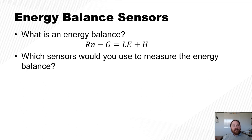Okay, so the next thing I'd like to touch on is energy balance sensors. So energy balance, what is an energy balance? It's simply the net radiation minus the ground heat flux which is balanced by how that energy is partitioned into latent and sensible heat flux. Okay, so Rn minus G equals Le plus H.